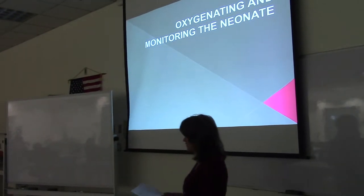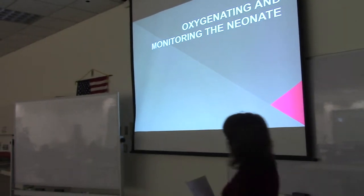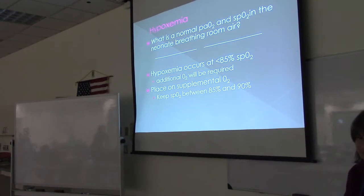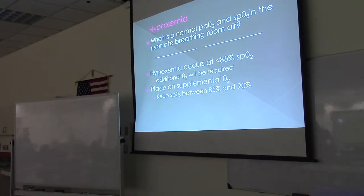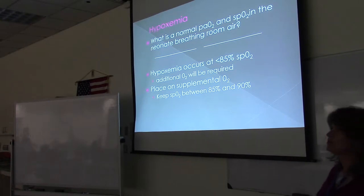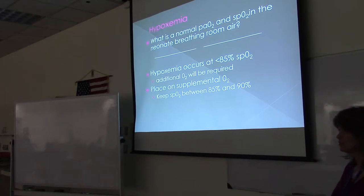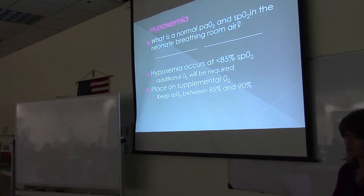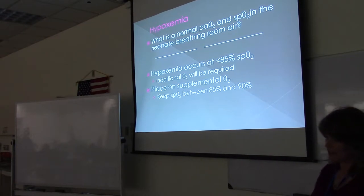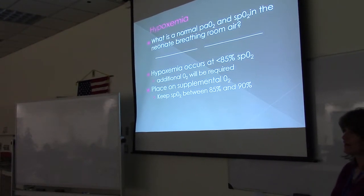We're talking today about oxygenating and monitoring the neonate. The first slide talks about hypoxemia and asks: what is a normal PaO2 and SpO2 in the neonate breathing room air? Oxygen level is a little bit lower than adult oxygenation — it's 50 to 80 millimeters of mercury in the neonate. Normal PaO2 is 50 to 80 mmHg, and that gives a saturation, an SpO2, of 88 to 95%.